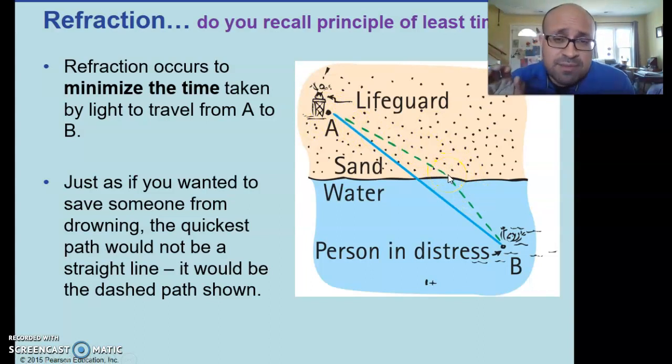That's because it's going to maximize their ability to get to point B as fast as possible. So light doesn't have consciousness like a lifeguard does, but it does follow the laws of physics. And as a result, if light was going from a medium one into a medium number two, it's going to end up doing the exact same thing as this lifeguard, and it's going to get from point A to point B as fast as it possibly can. And the way that it achieves that is through this bending effect.